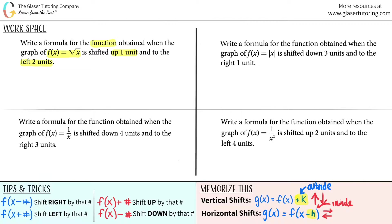Here are the tips and tricks: if you want to shift to the right, you subtract a number; if you want to shift to the left, you add the number — and that has to be inside the function. Horizontal shifts, left and right, are always added inside the function. Up and down shifts are outside the function — shifting up means adding your number, shifting down means subtracting.